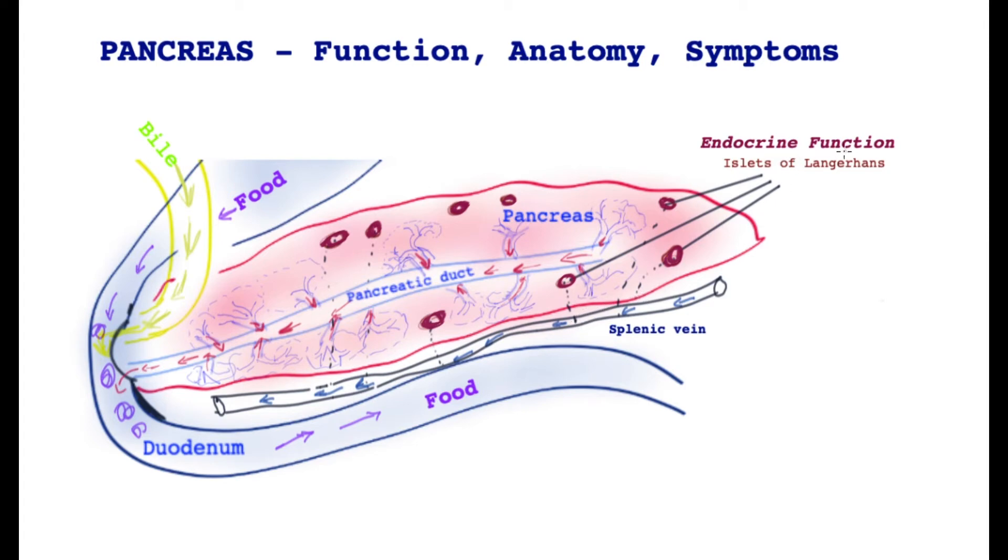There are several different kinds of cells within the islets of Langerhans, each producing a different hormone.